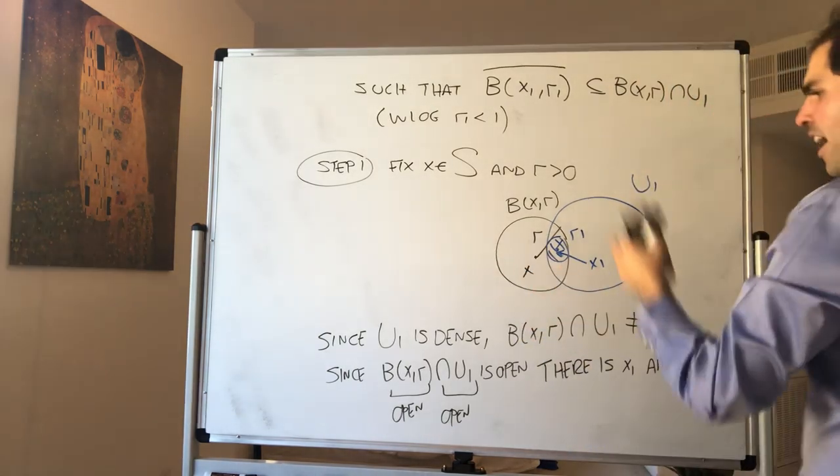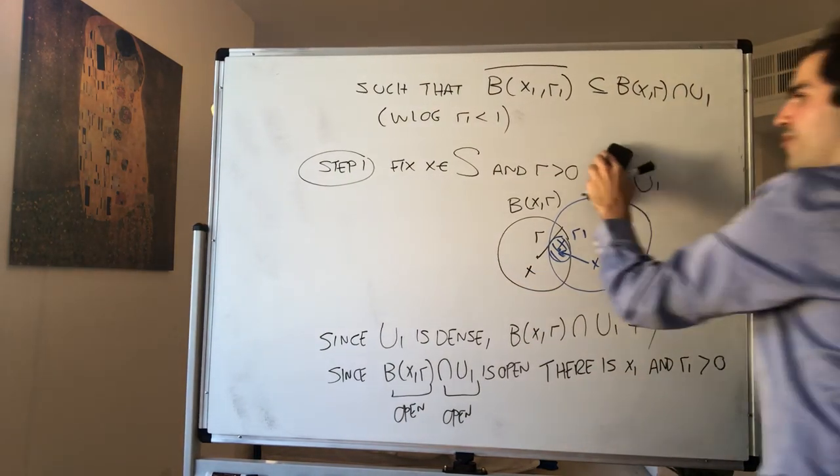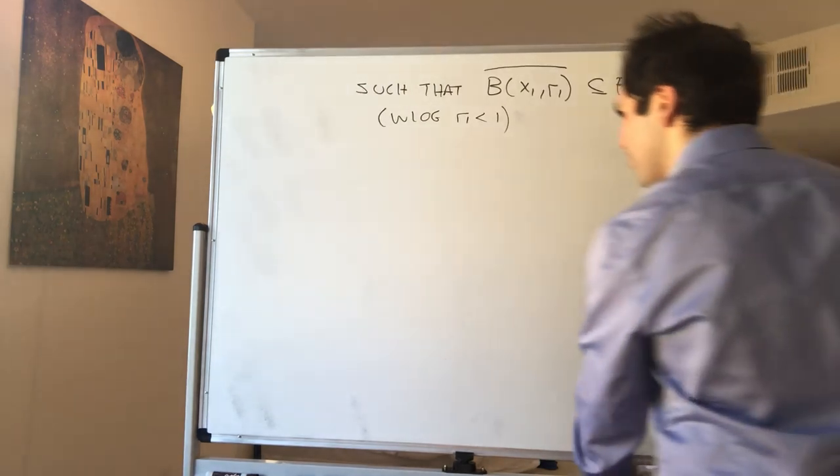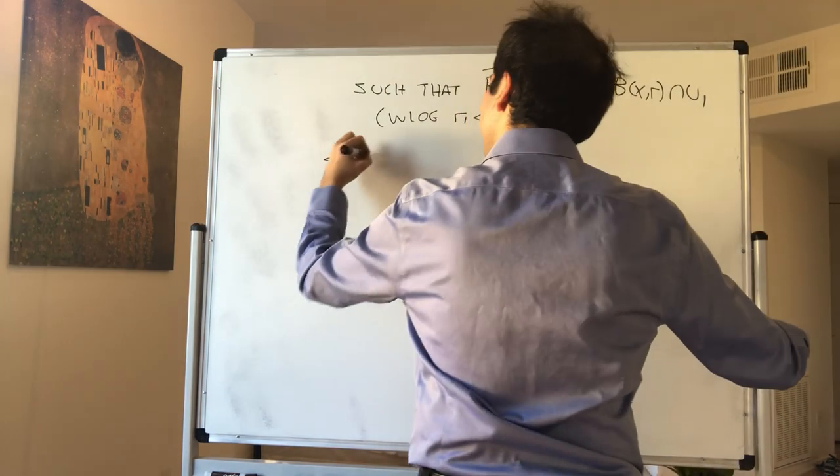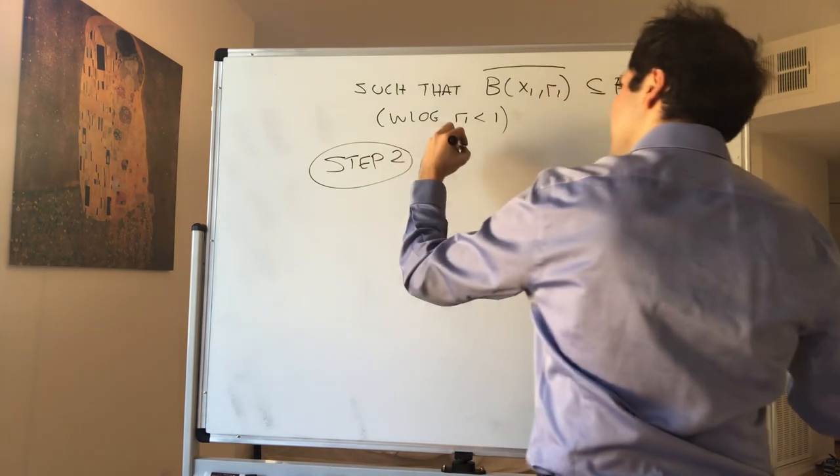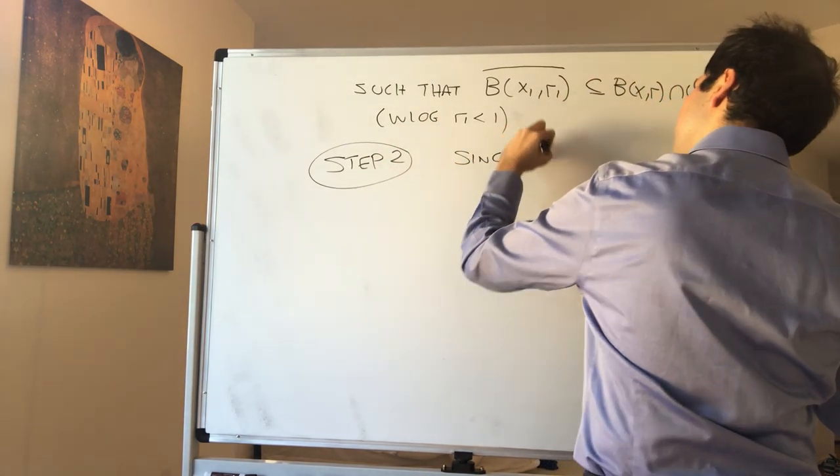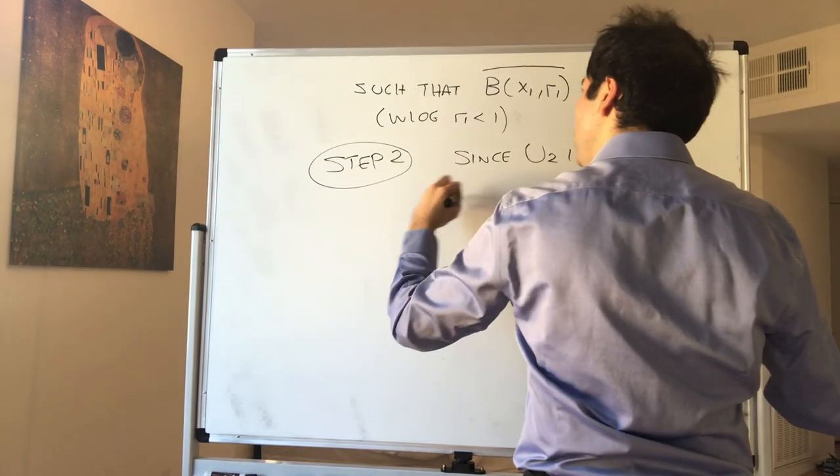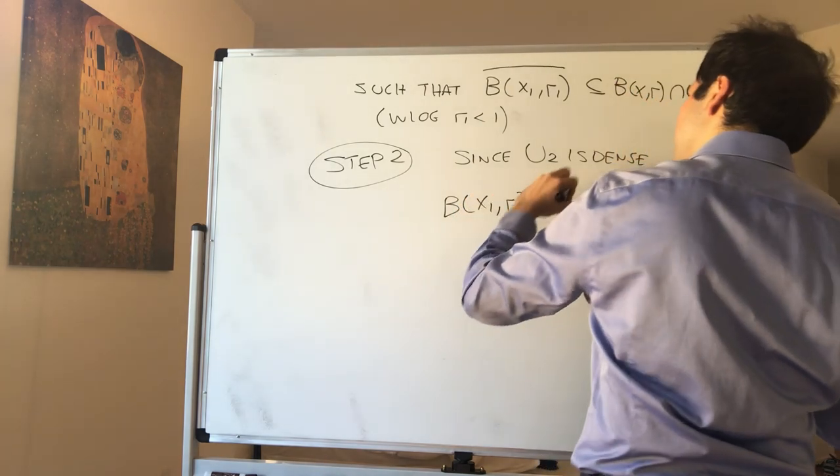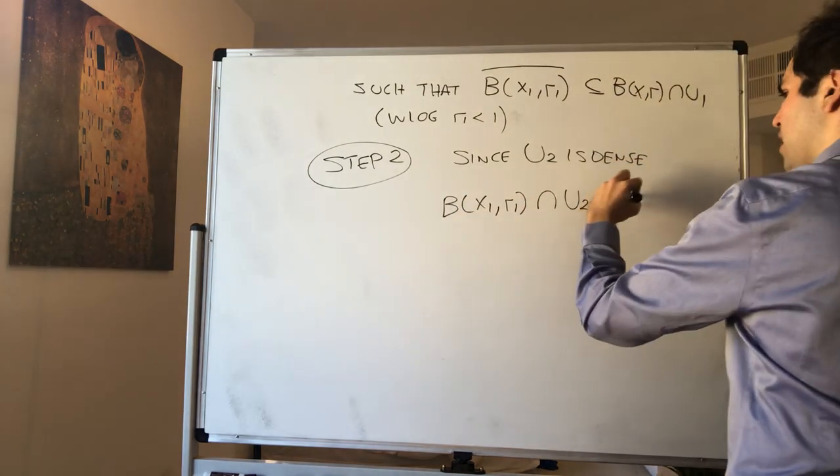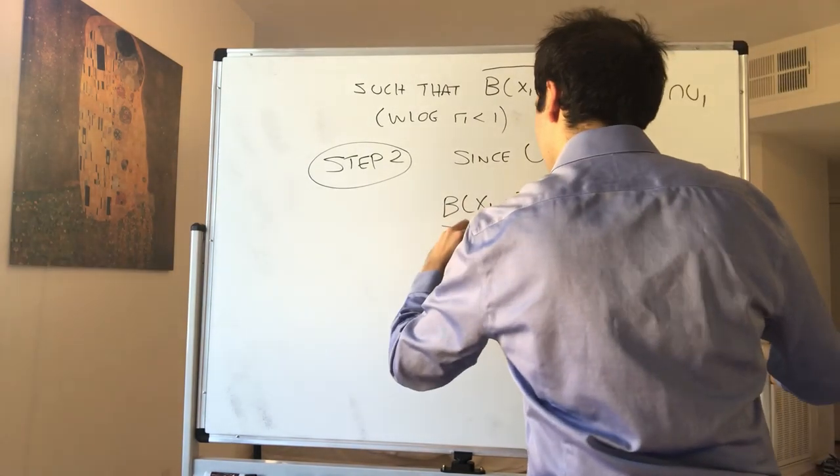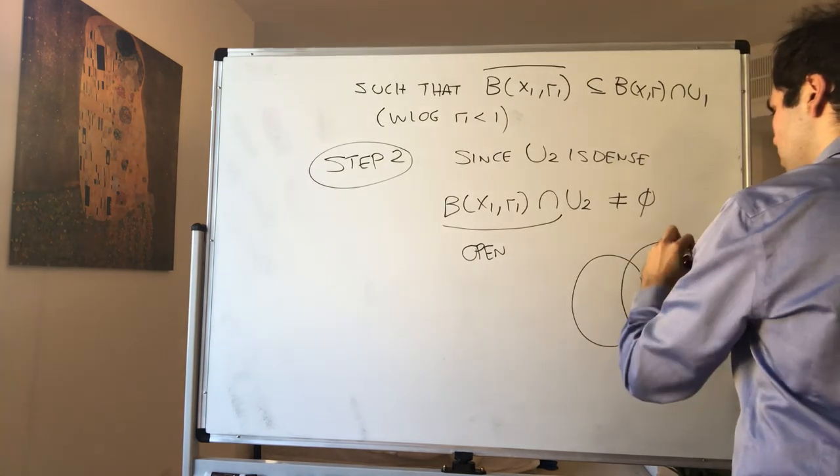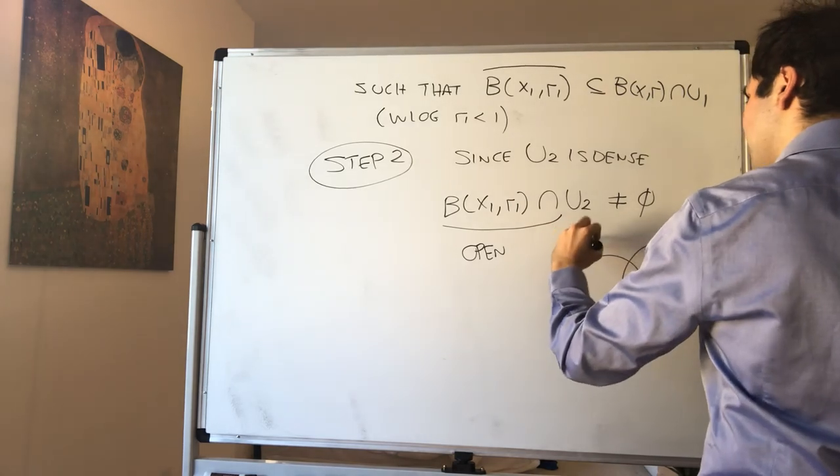Okay, good. And then the nice thing is, well, we can just continue that way. Since it was so much fun, let's play that spiel again. So step two. Again, since let's say u2 is dense, we know that if you take our new ball B(x1,r1) intersect u2, that's not empty and open. Therefore, we can also fit a ball inside the new things. So u2 and B(x1,r1).